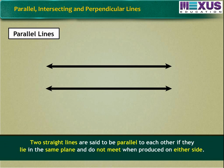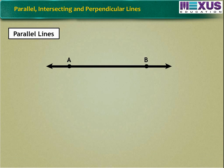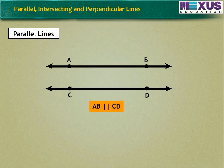Two straight lines are said to be parallel to each other if they lie in the same plane and do not meet when produced on either side. In this figure, we see that line AB and line CD do not meet each other. Therefore, we can say AB is parallel to CD.